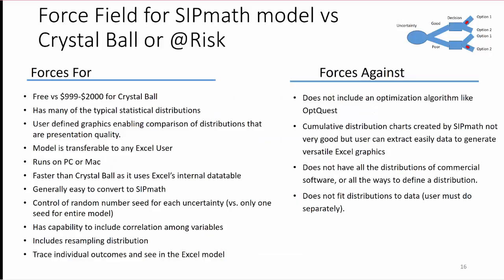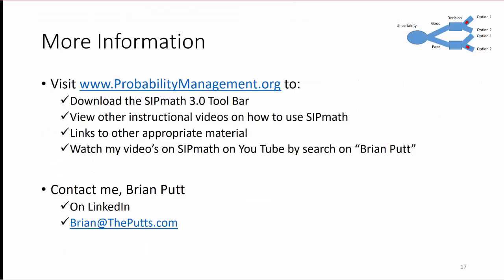There are forces for and against using SIPMath versus Crystal Ball or AtRisk. The biggest advantage is Crystal Ball costs $1,000 to $2,000, where SIPMath is free. They're somewhat interchangeable, but SIPMath is also faster because it uses Excel's internal database. For more information, I'd encourage you to go to probabilitymanagement.org and download the SIPMath 3.0 Toolbar. You can view instructional videos on the website and there may be links to other appropriate material. You might also want to watch my videos on SIPMath on my YouTube channel — just search for Brian Putt — and you can contact me at LinkedIn or brian@theputts.com. Thank you for listening.